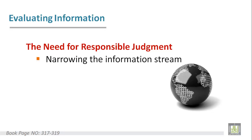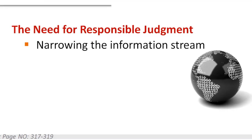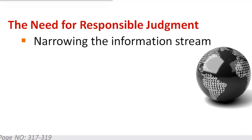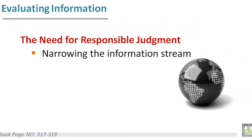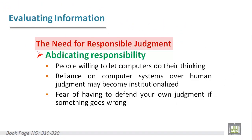Another issue regarding the need for Responsible Judgment is Narrowing the Information Stream. Some critics see the Web as significantly encouraging narrowness and political extremes by making it easy for people to avoid seeing alternative opinions. Another reason for the need for Responsible Judgment is Abdicating Responsibility.